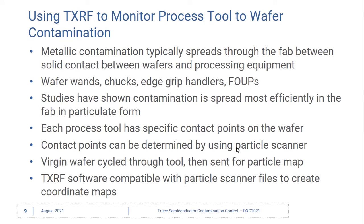Now we'll talk about how we use TXRF to monitor process tool-to-wafer contamination. Metallic contamination typically spreads through the fab between the solid contact points of the processing equipment and the wafer itself. This processing equipment handles the wafers with end effectors and wafer wands,